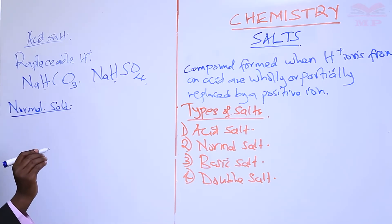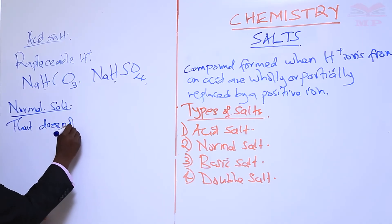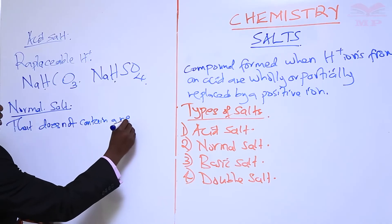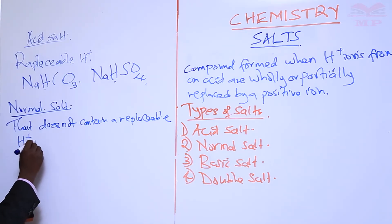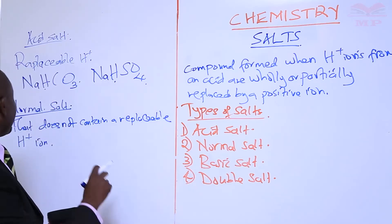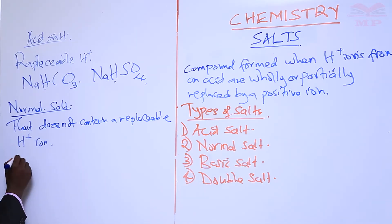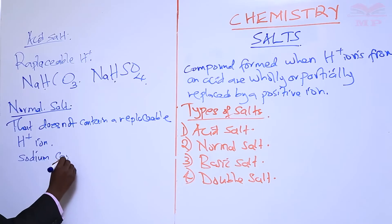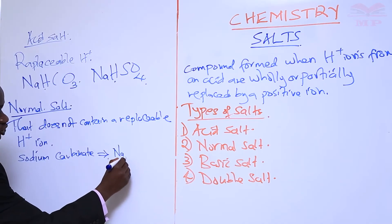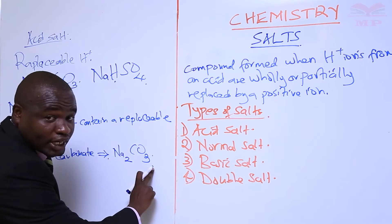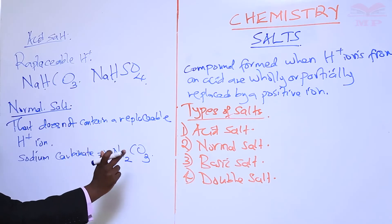A normal salt can be defined as a salt that does not contain a replaceable hydrogen ion. For example, sodium carbonate (Na₂CO₃) — as you can see from this formula, this salt does not have a hydrogen ion, and therefore we call it a normal salt.